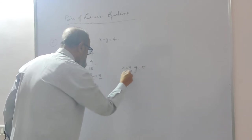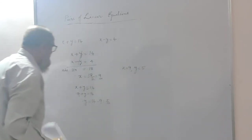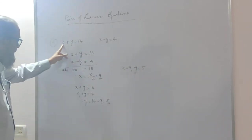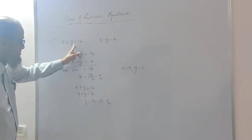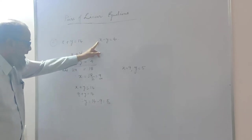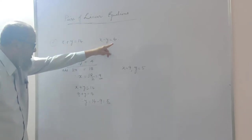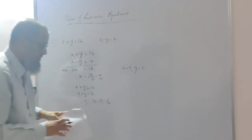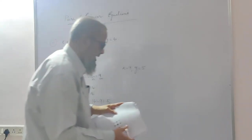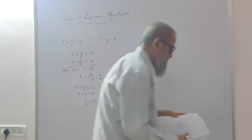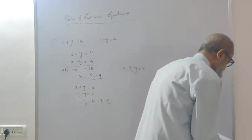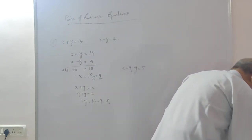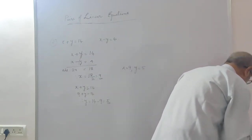This is the solution. You can verify it: 9 plus 5 is 14, and 9 minus 5 is 4. Both equations are satisfied. Hence it is correct, and we get those 2 marks.